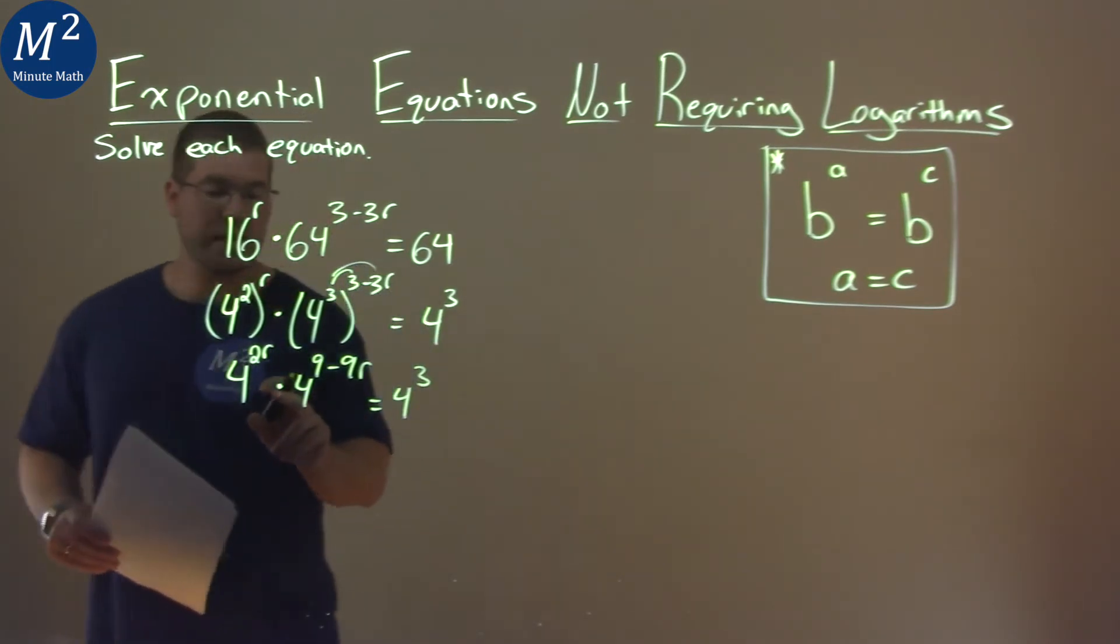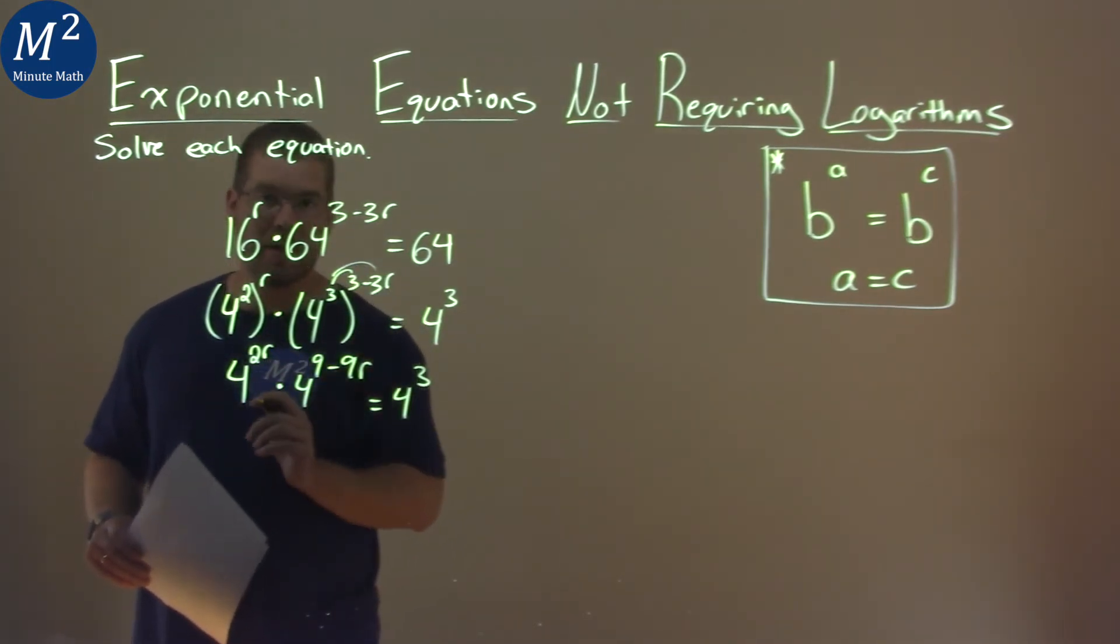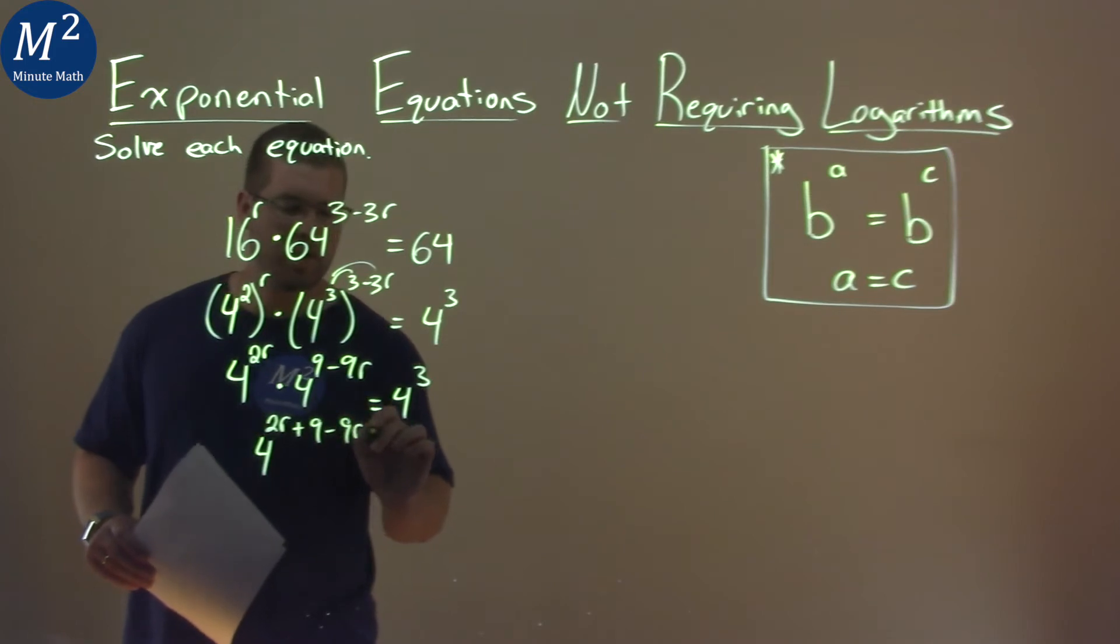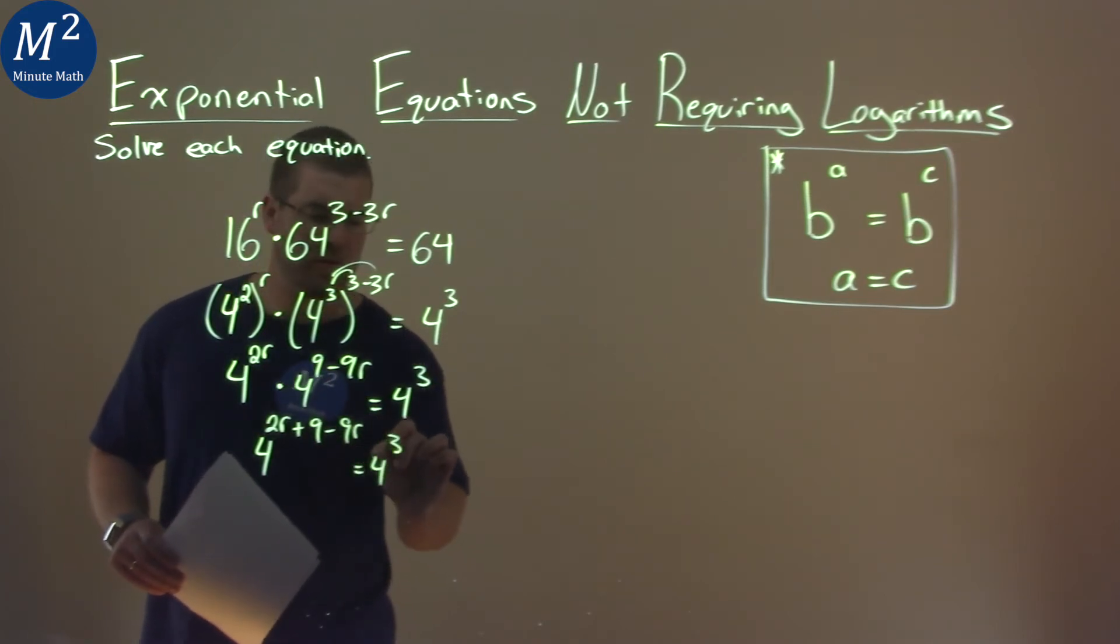Now, with multiplication with the same base here, we add the exponents and keep the same base. So 4 to the 2r plus 9 minus 9r is equal to 4 to the 3rd power.